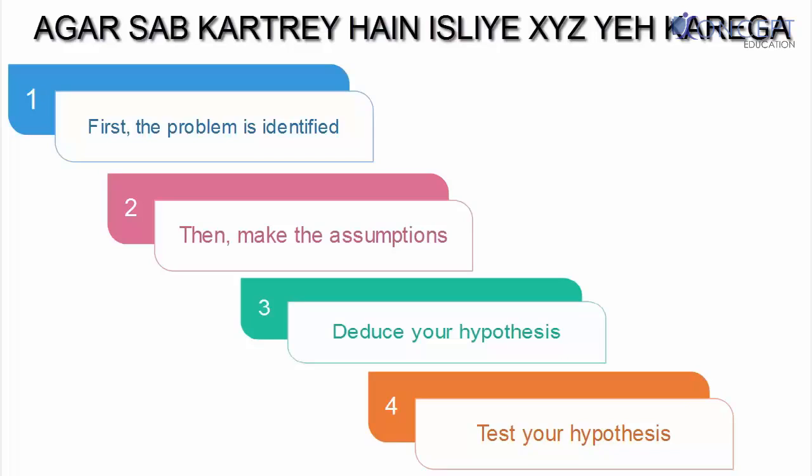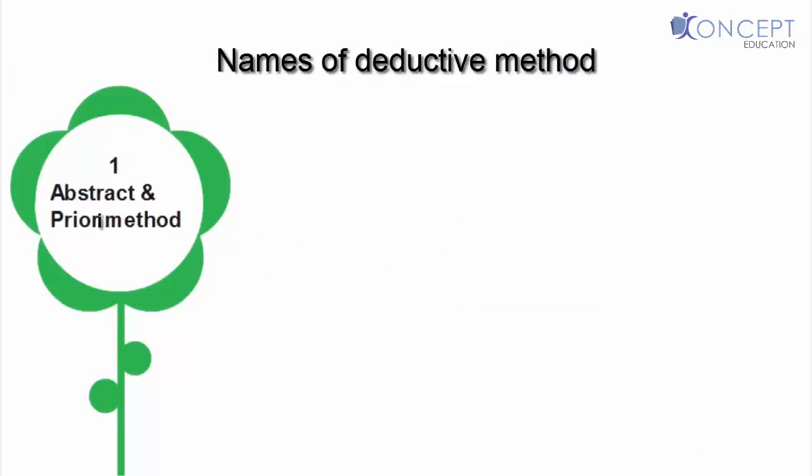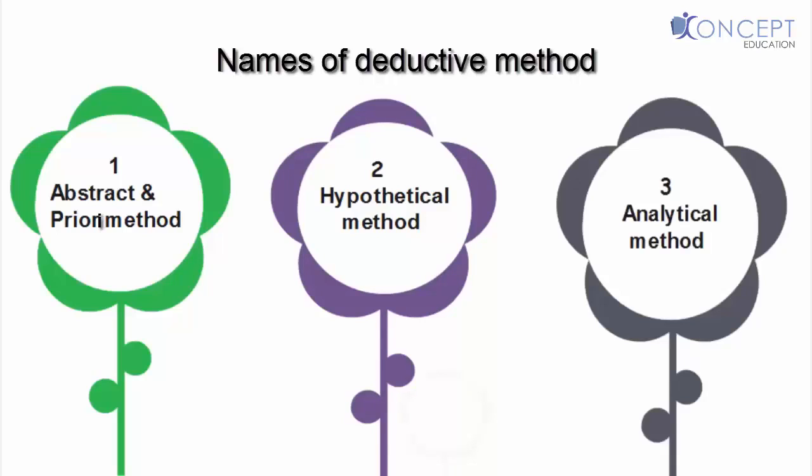This deductive study is also called, and this is a very important MCQ, they keep on asking what is the other name of deductive method. So, the other names of deductive methods are abstract method, a priori method. And the words abstract and a priori give you the sense that it is based on abstract reasoning and not actual facts. And this is how you learn from society. The second name can also be hypothetical method, as this is based on deductions and testing of hypothesis. The third name can be analytical method, as we analyze the general assumptions.